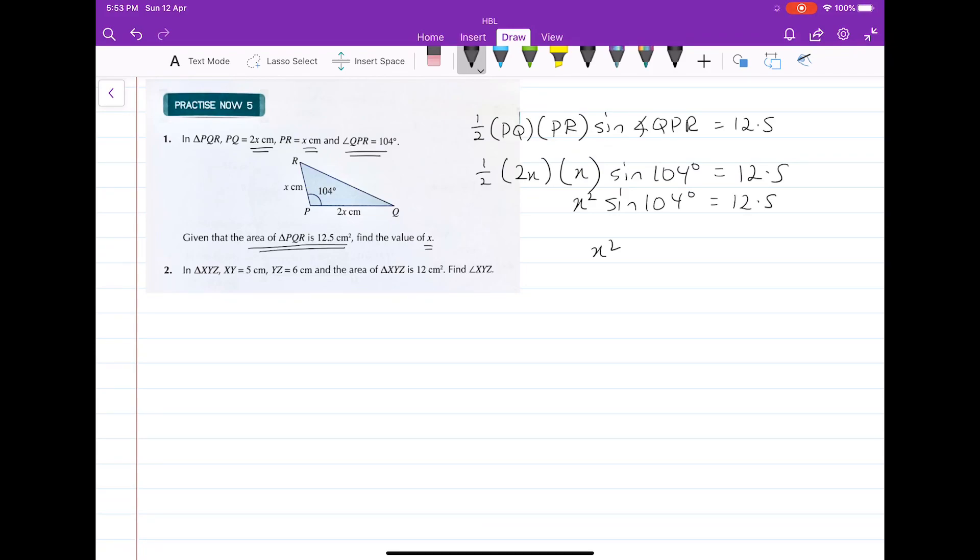Then x squared equals 12.5 divided by sine 104 degrees. Finally, x equals the square root of 12.5 over sine 104 degrees.